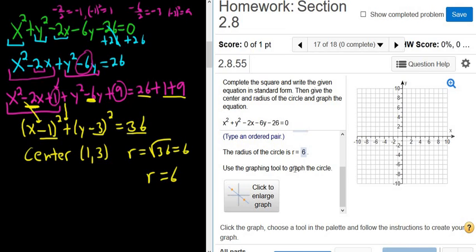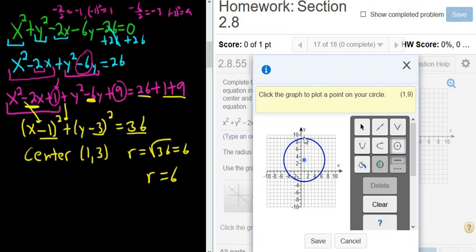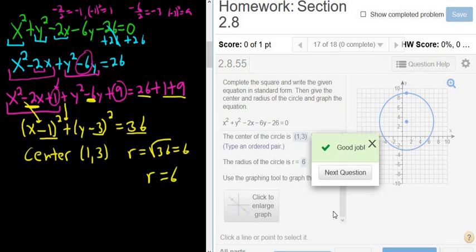Now it says use the graphing tool to graph the circle. So I'm going to click this to enlarge the graph. And I'm going to hit the circle graph. Click the graph to plot the center of your circle. Now remember, as I hover through the graph, your point shows up on the top right corner here. So we want the point 1, 3. It's right there. And then the radius is 6. I'm just going to go up 6. That's going to take me to 1, 9. You can go up, down, left, or right. It's up to you. I'll go up. Click save. Click check answer.